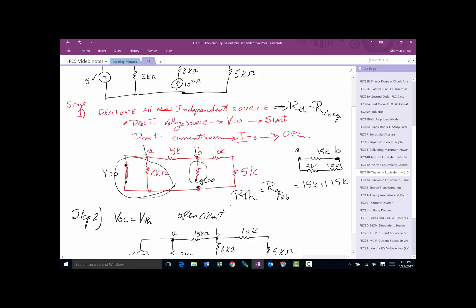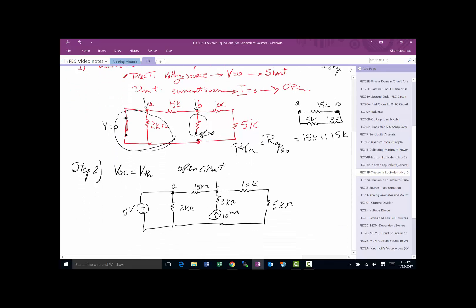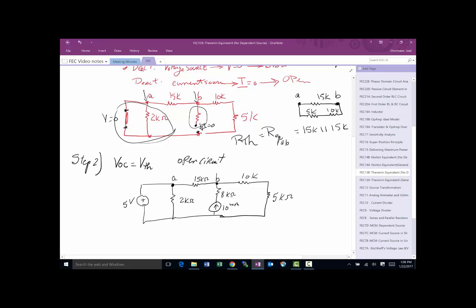So that becomes step two. Step two is I'm going to find V open circuit, which is basically V Thevenin. So open circuit, which basically means don't put a load on my circuit. Leave the terminals that I'm interested in untouched. That doesn't mean you cut the 15K resistor in here. That doesn't mean you just do. You're not going to add load to this. You leave these open.